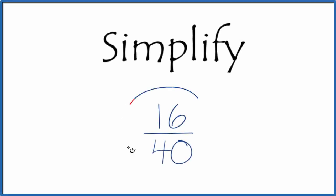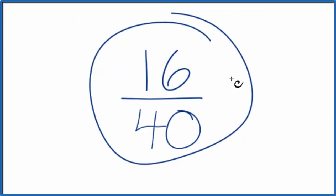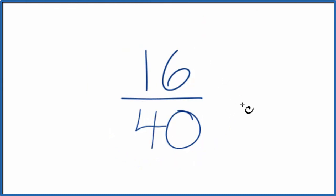Let's simplify the fraction 16 over 40. So what we're trying to do, we're trying to find another fraction that's equivalent. It's equal to the value of 16 over 40, but it's in lowest terms.